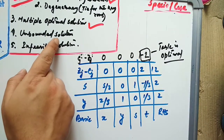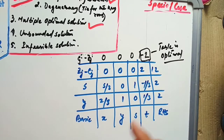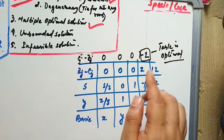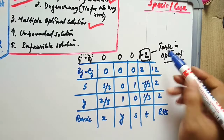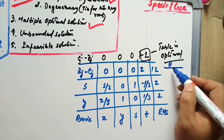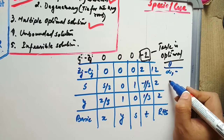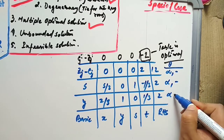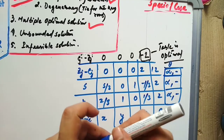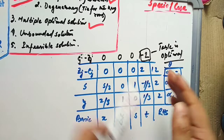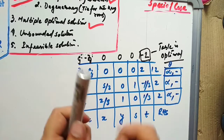The next special case is unbounded solution. An unbounded solution occurs when there is no constraint on the solution. It can be detected when cj minus zj suggests an entering variable exists, but the replacement ratio theta values are either infinity or negative — meaning there is no departing variable. When all replacement ratios are infinity or negative, the LP problem is unbounded.